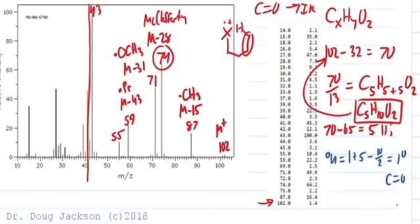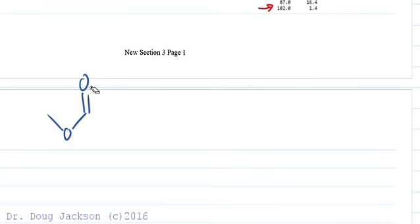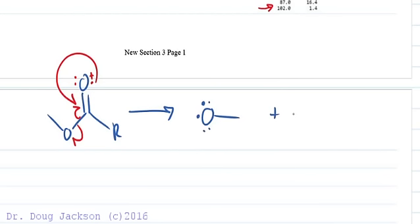Now we've got to explain away the fragments that we have here. That OCH3 tells us something very important. It tells us that we probably have this feature in our molecule, because esters like to do alpha cleavage here and here. If we do alpha cleavage from a ketone, we're going to lose that OCH3 as a radical, and then the ion that we see at M minus 31 is going to be this compound.